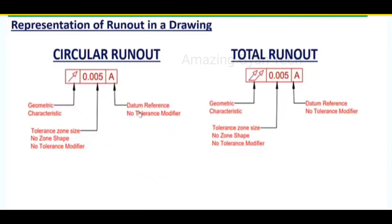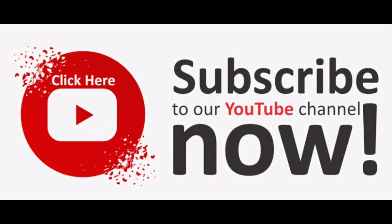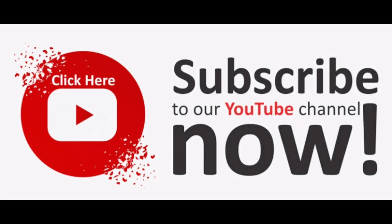Datum reference is compulsorily required. To easily remember these two runouts, we can relate them to circularity and cylindricity. In circularity, we measure without any datum reference. In circular runout, we use a datum reference — that is the difference. Similarly for cylindricity and total runout: without any reference we measure cylindricity, but when you give a datum reference and measure the runout throughout the surface with respect to one datum, then it is going to be total runout.